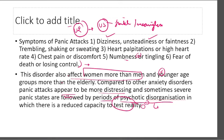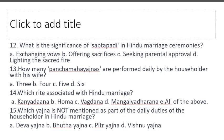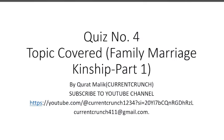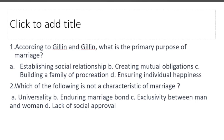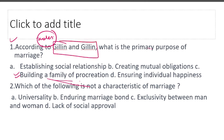Next, we will go to the video solutions. We will discuss the quiz solutions I had told you about. I hope you have attempted it. We have covered the FMK topic — Family, Marriage and Kinship. According to Gillen and Gillen, what is the primary purpose of marriage? Building a family of procreation — they told us the primary purpose of marriage. I have not included all definitions in notes because there are too many; the cost-benefit ratio of memorizing all definitions is poor.